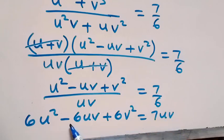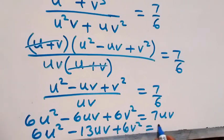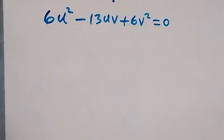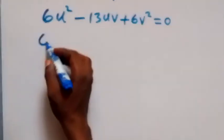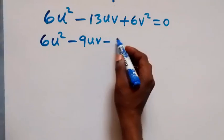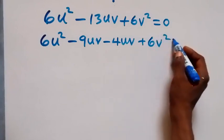Cross-multiplying gives 6(u squared minus uv plus v squared) equals 7uv. Rearranging: 6u squared minus 6uv plus 6v squared minus 7uv equals 0, which simplifies to 6u squared minus 13uv plus 6v squared equals 0. To factor, we find factors of 36 that sum to minus 13: that is minus 9 and minus 4. So we split the middle term: 6u squared minus 9uv minus 4uv plus 6v squared equals 0.